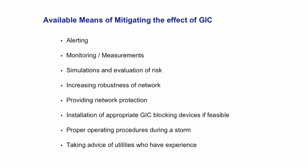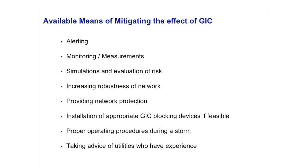Another mitigation option is providing network protection and the installation of GIC blocking devices. When you block GIC from entering the transformer, the transformer does not saturate, and if it does not saturate, you avoid heating in the transformer and the associated consequences in the power system. You do not need to do this on every transformer, but if there is no other solution, it would be a good idea to block the GIC.